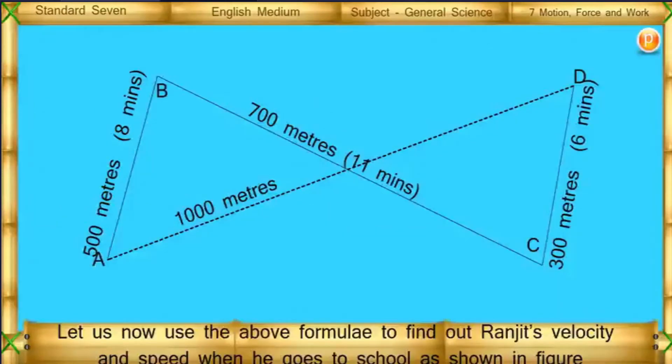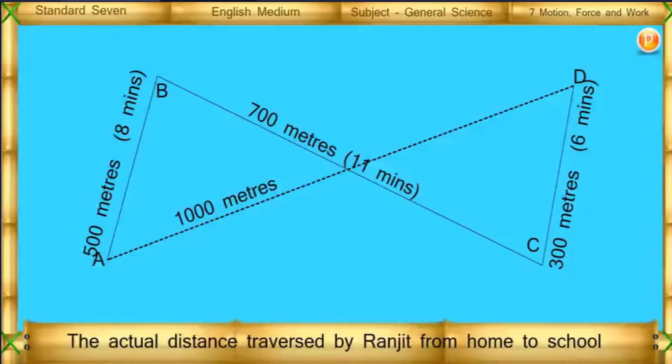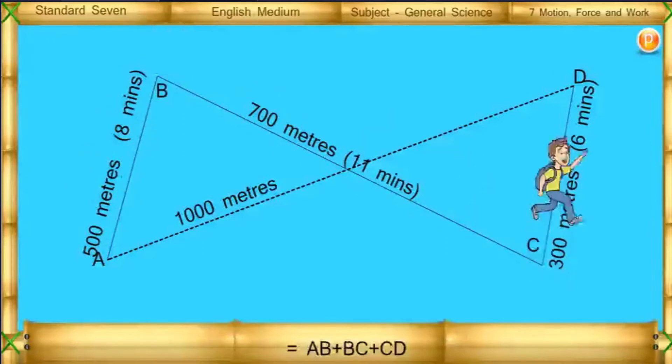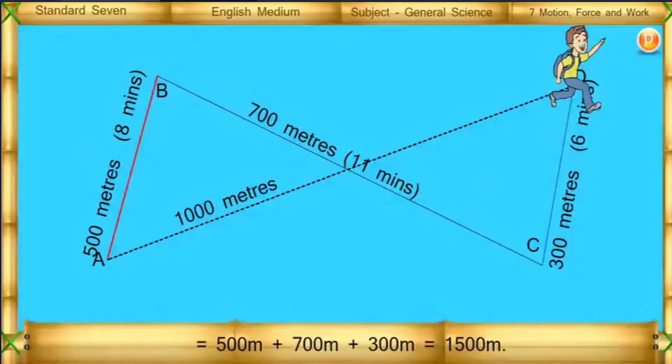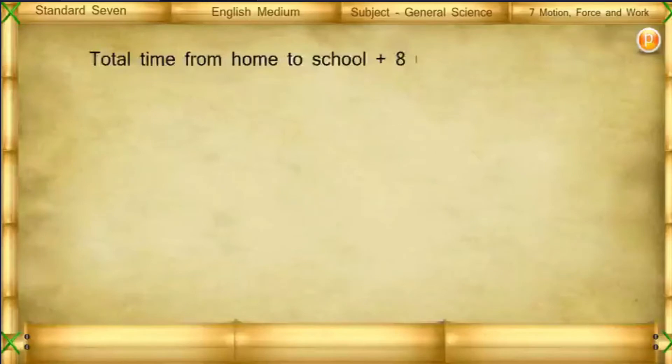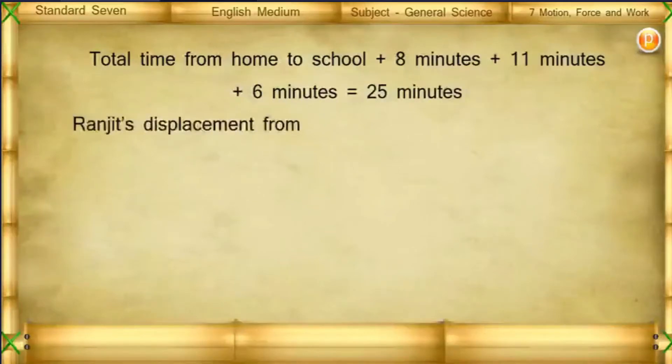Let us now use the above formula to find out Ranjit's velocity and speed when he goes to school as shown in figure. The actual distance traversed by Ranjit from home to school equals AB plus BC plus CD, that is equal to 500 meters plus 700 meters plus 300 meters equals 1500 meters. Total time from home to school: 8 minutes plus 11 minutes plus 6 minutes equals 25 minutes. Ranjit's displacement from home to school AD equals 1000 meters.